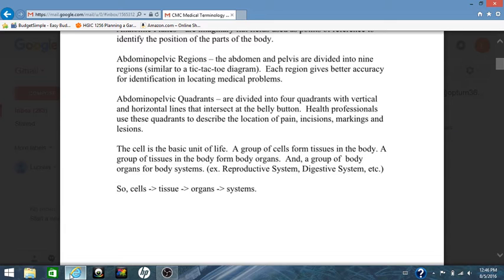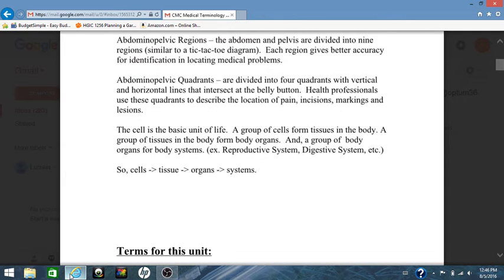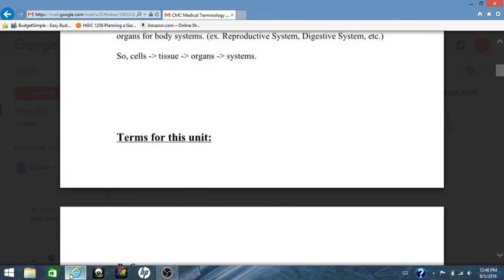So cells lead to tissues, lead to organs, which lead to systems. And if you break down a system, a system is a group of organs, organs is a group of tissues, and tissues are a group of cells. So you see how that diagram shows the arrows?